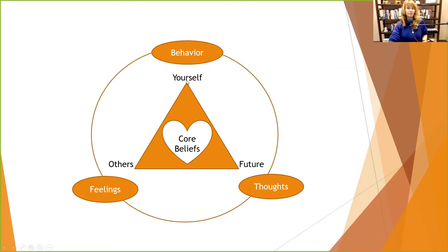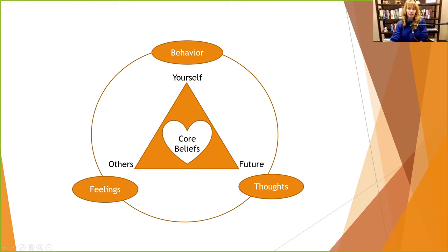Your feelings, thoughts, and behavior impact you — that's the inside of the triangle. But the way you feel, think, and act also impacts your future and how you interact with others, which matters because social support is a big buffer for us. If you have positive thoughts, positive feelings, and generally engage in positive behaviors, you'll probably feel pretty good about yourself, have good relationships, and have an optimistic feeling about the future. Your core beliefs may be more like 'people are generally good' and 'I can do this' — very self-affirming and other-affirming positive core beliefs.